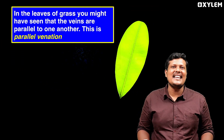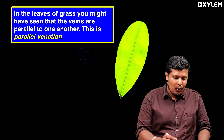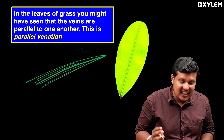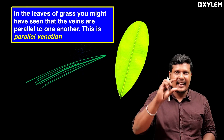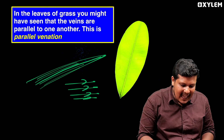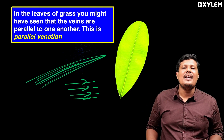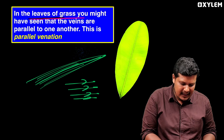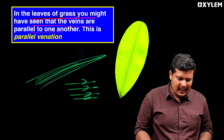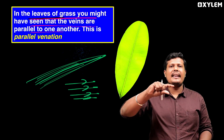In the parallel venation case — in the leaves of grass, you might have seen the veins parallel to each other. Parallel venation — the veins are arranged parallel to each other. This is called parallel venation.